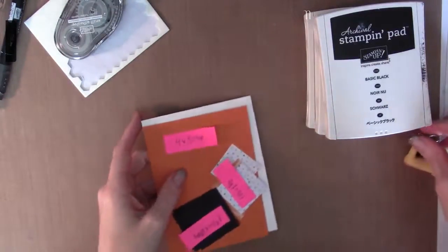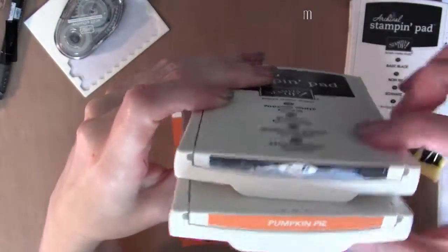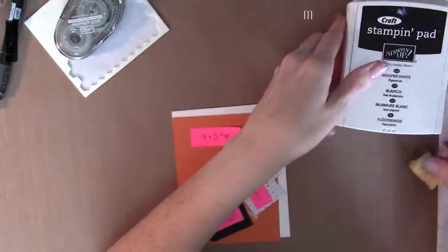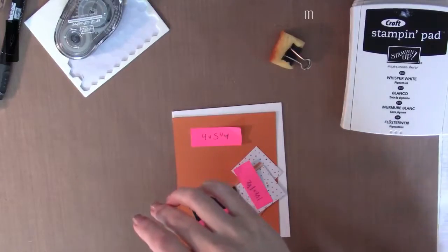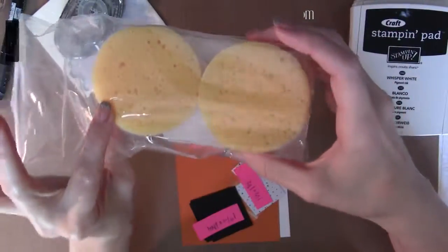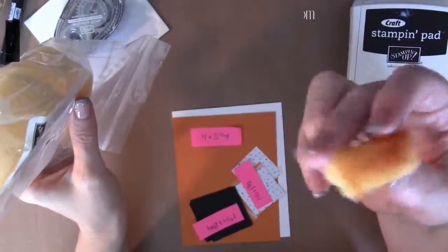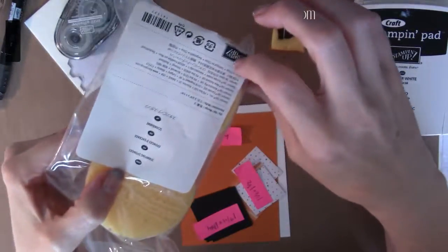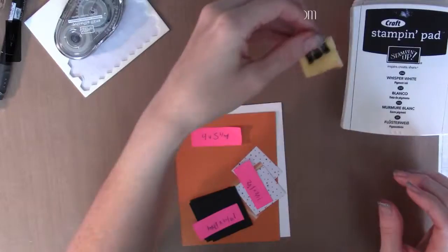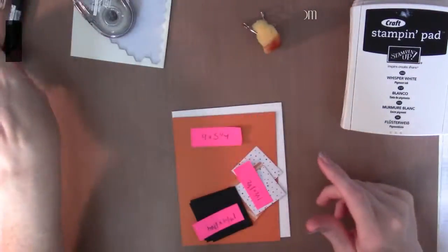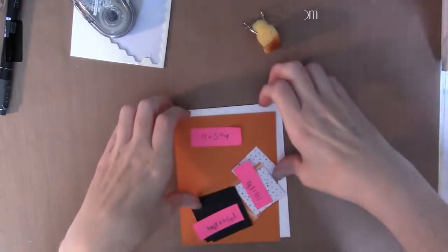We're gonna be using Archival Basic Black, Craft White, I believe it's just Whisper White, Craft, Whisper White, and Pumpkin Pie. You're gonna need a little sponge. Stampin' Up sells these sponge daubers. They come in circles like this. You can wash them with soap and water and reuse them a few times. You can cut them up. I tend to just cut mine up. I believe they're only three fifty, and you get three of these size sponges. I just use a binder clip on the end. Your Snail adhesive, some Dimensionals, if you happen to have a Stampin' Write Basic Black marker, go ahead and grab that.